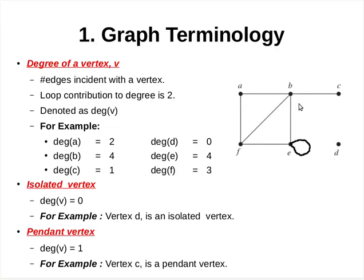Based on the observations on the degree of a vertex, we shall discuss two new terms. The first one is isolated vertex — it is a vertex with degree 0. In the given graph, vertex D is an isolated vertex as its degree is equal to 0.